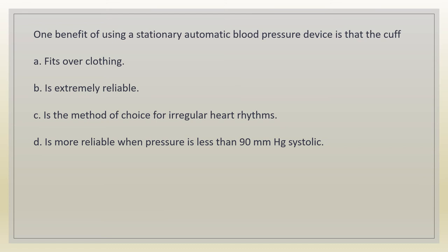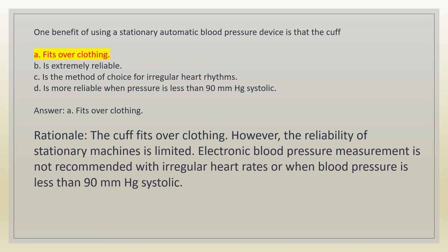One benefit of using a stationary automatic blood pressure device is that the cuff: A. fits over clothing. B. is extremely reliable. C. is the method of choice for irregular heart rhythms. D. is more reliable when pressure is less than 90 mmHg systolic. Answer: A. Fits over clothing. Rationale: the cuff fits over clothing. However, the reliability of stationary machines is limited. Electronic blood pressure measurement is not recommended with irregular heart rates or when blood pressure is less than 90 mmHg systolic.